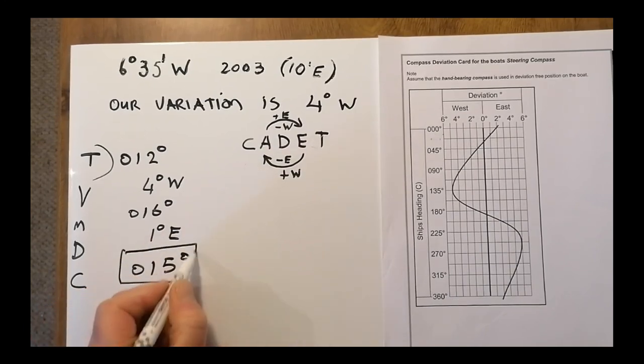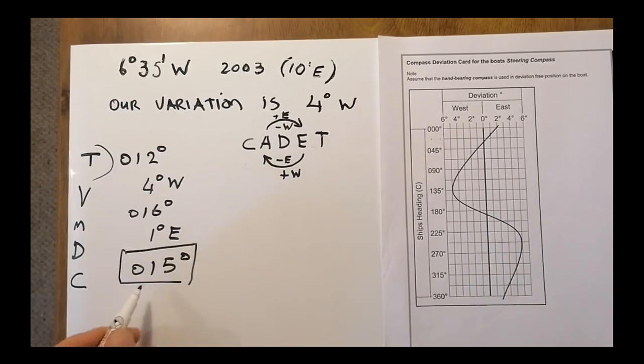So when I steer to that point on the chart, I'll be using my compass and steering 015, and that's me allowing for variation and deviation.